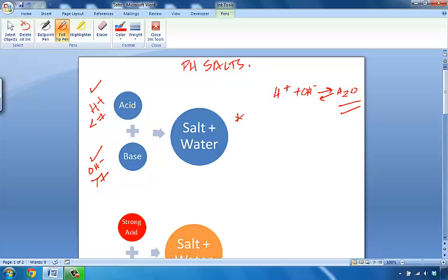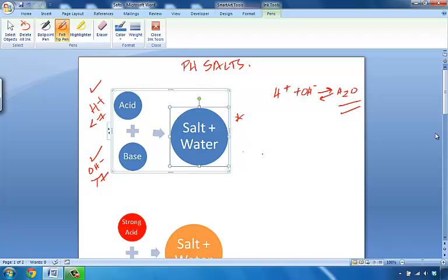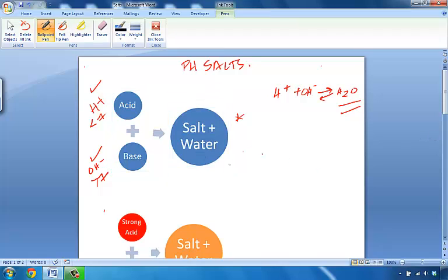But don't forget, water is not the only product formed from a neutralization reaction. Salts are also formed. Salts are composed of a cation and an anion, some sort of ionic substance. In order to determine something about that salt, we need to know about the acid and the base that formed it.